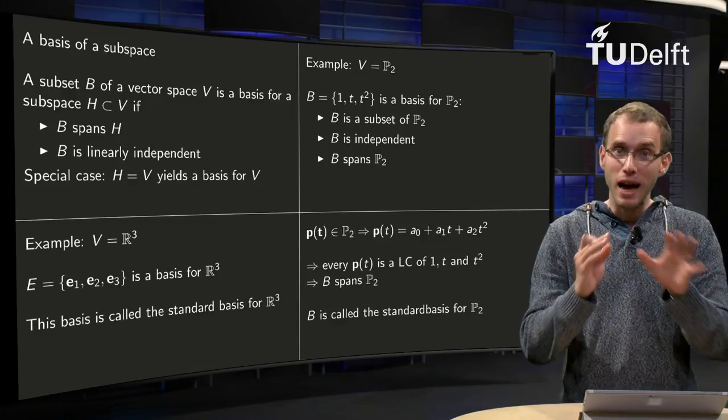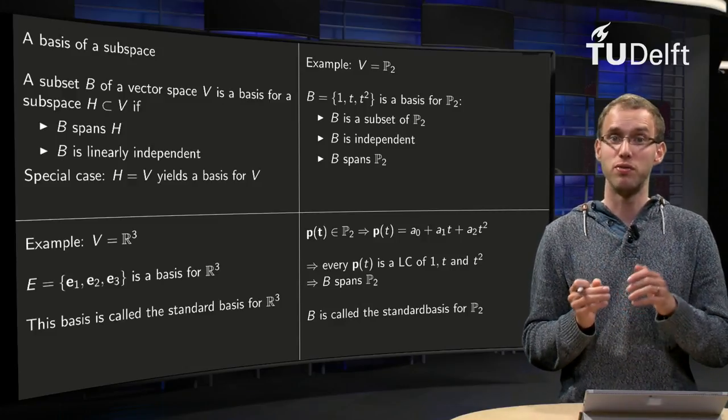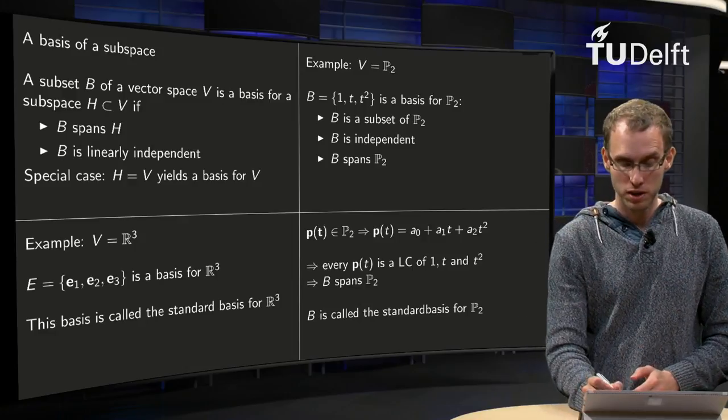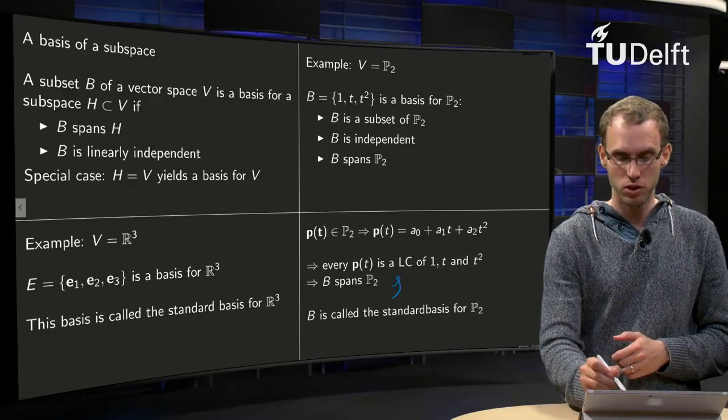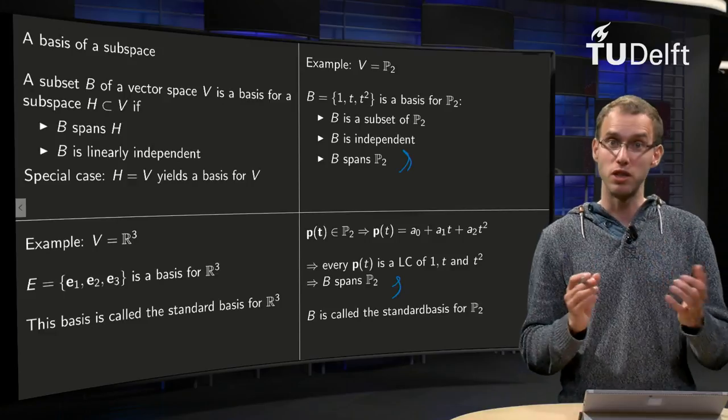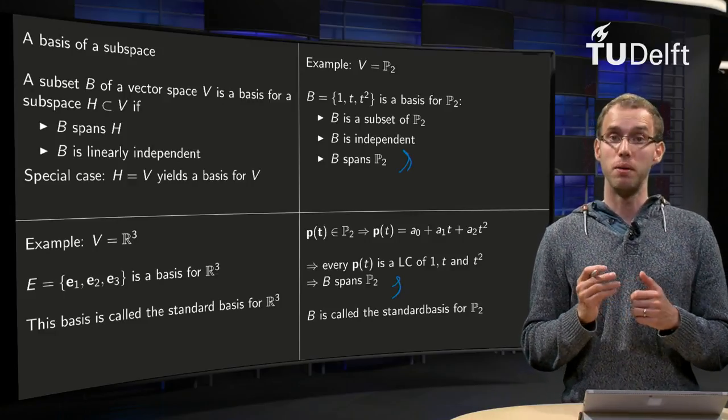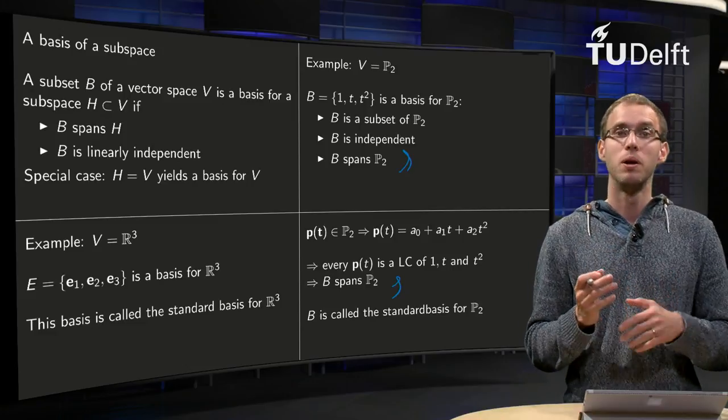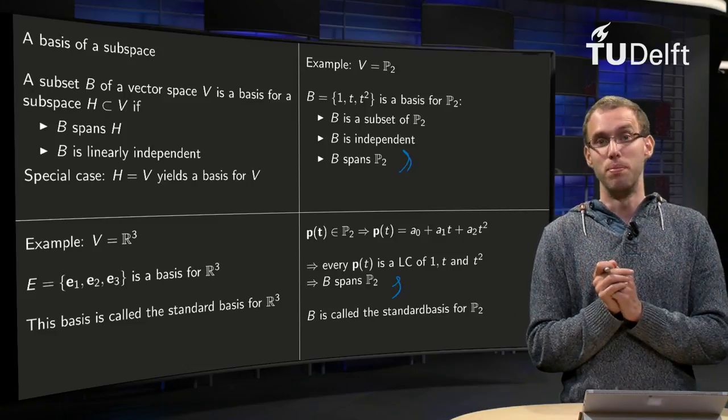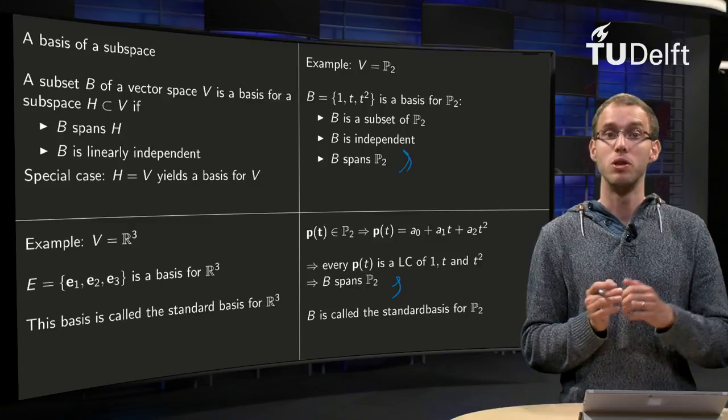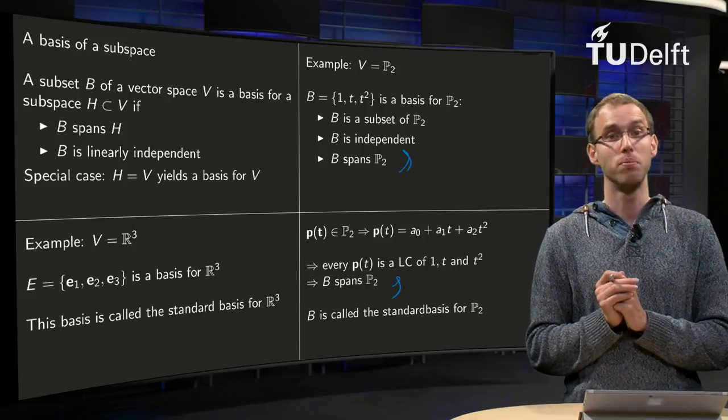You see that all of those polynomials are combinations of 1, t, and t² with those weights a₀, a₁ and a₂. That means that you can form any polynomial with the basis vectors 1, t, and t², which means that B spans P₂. So this third condition is also satisfied, and means that we have found a basis of P₂, namely 1, t, and t². This is the easiest basis you can think of for P₂, so this will be our standard basis for P₂.